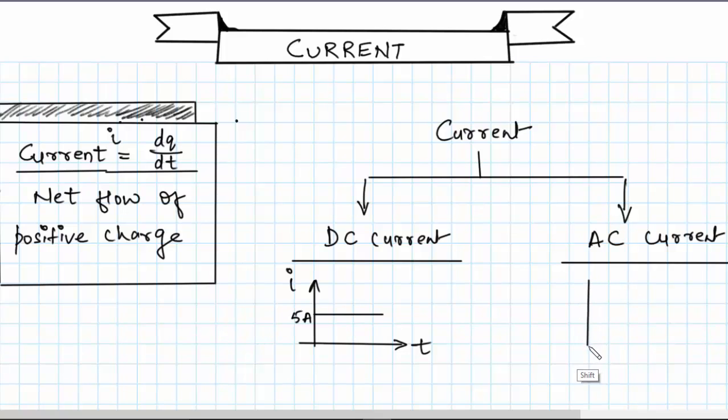However, let's consider some situation where current is varying with time. So again we have a graph with i and t, time and current. It's varying like this, so we will say that this is AC current because it is varying with time.